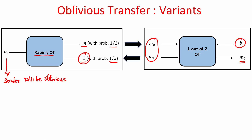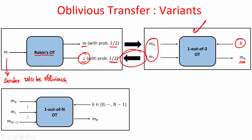The reason we follow our definition of OT is that it is easier to use when designing MPC protocols. If you are wondering whether Rabin's version is equivalent to the variant we defined — the answer is yes. It can be shown that a secure protocol for Rabin's OT can be used to construct a protocol satisfying our variant's requirements, and vice versa. Both directions hold.